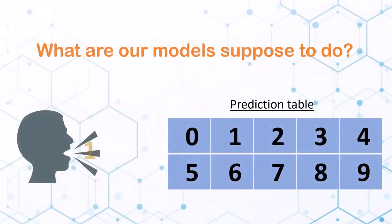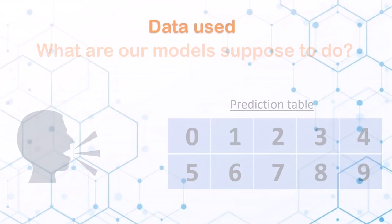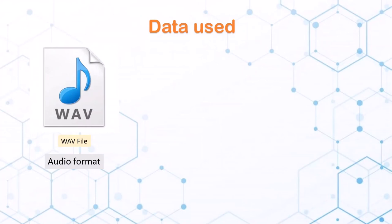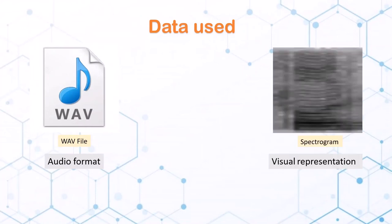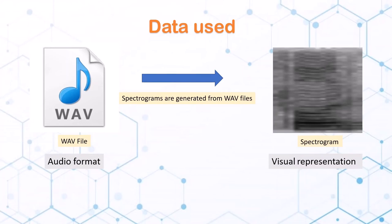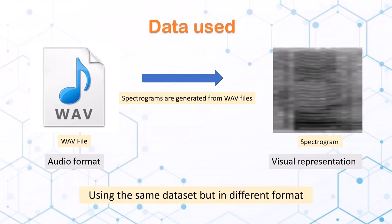Ideally, we will try to classify the spoken digits to their respective labels, such as 8 being classified as 8. We used wave files or spectrograms depending on the model. A spectrogram is generated from the wave files, so we are using the same dataset but in different formats.